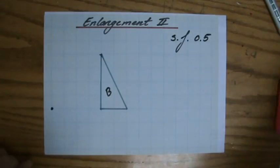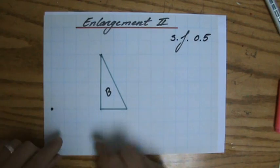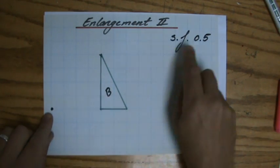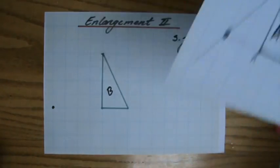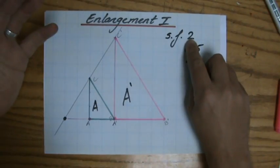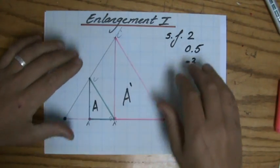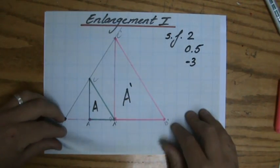And now I have sketched for you object B, which is a triangle, and I have a center of enlargement, and the scale factor is a half. Because I promised you in the previous video, where we had a scale factor of 2, what is going to happen if I have a scale factor between 0 and 1?